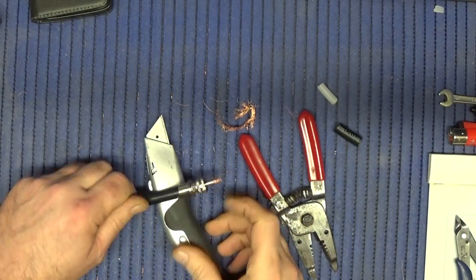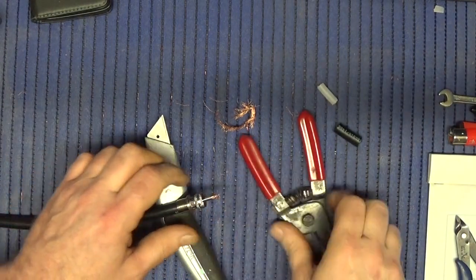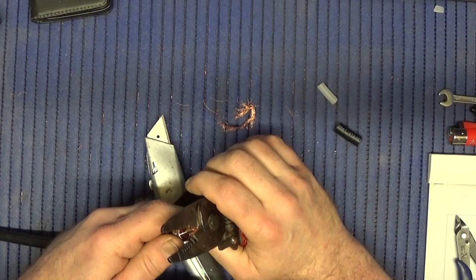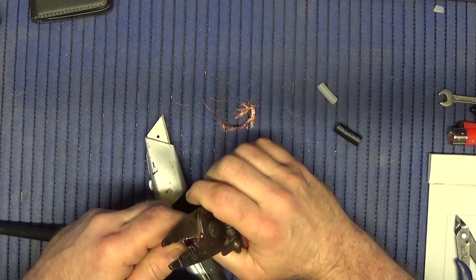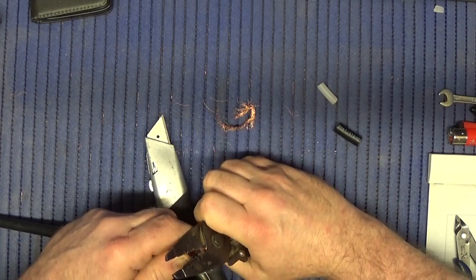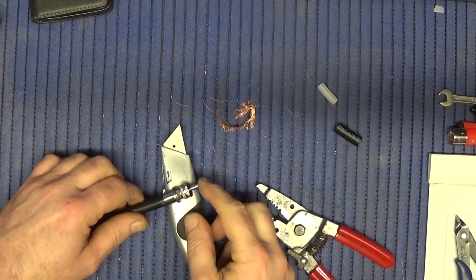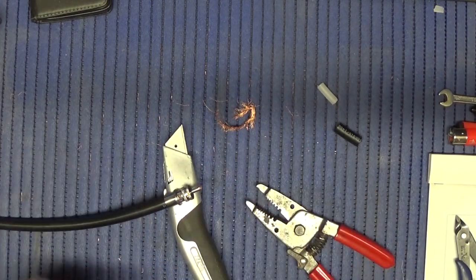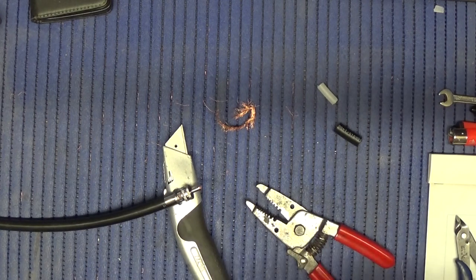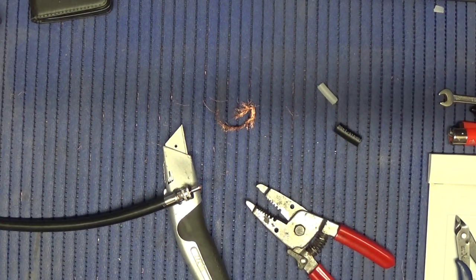So to solder the end up, the first thing I do is I'll snip this so that it's flush with the end. And then we want a nice hot iron and the biggest tip you've got.